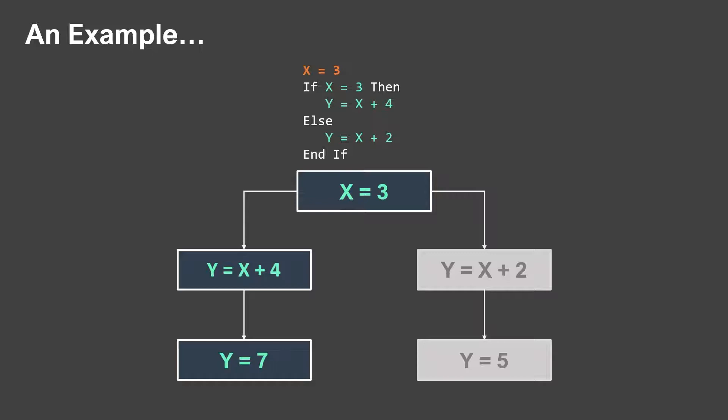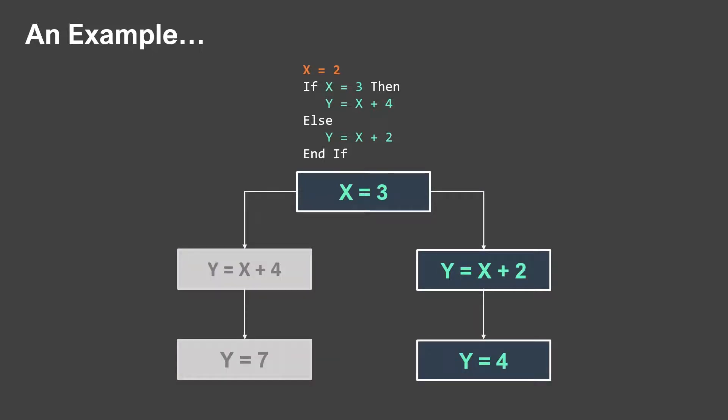Here's a concrete example. If I have a variable x equals three and my IF statement says 'if x equals three then' — well x does equal three, so it evaluates to true. The statement y equals x plus four executes, so y equals seven. We've taken the true path. Alternatively, if x were equal to two, the expression evaluates to false and we take the else path: y equals x plus two, so y equals four.